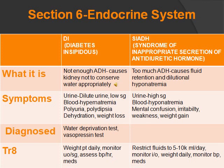Symptoms of SIADH, which is too much ADH, include high specific gravity. In the blood, they have hyponatremia, mental confusion, irritability, weakness, and weight gain. For DI, diagnosis is made with a water deprivation test and a vasopressin test.